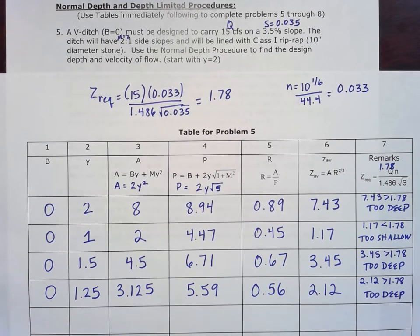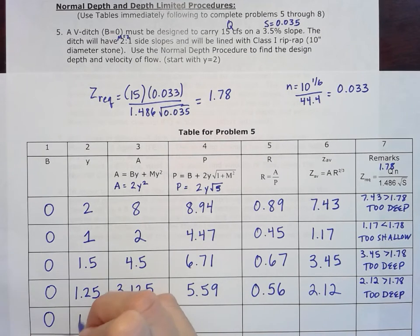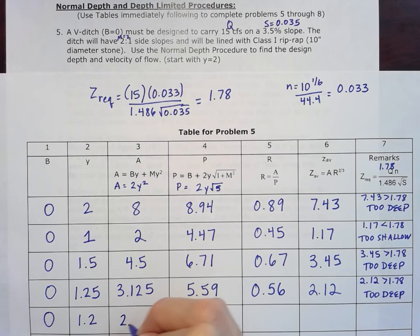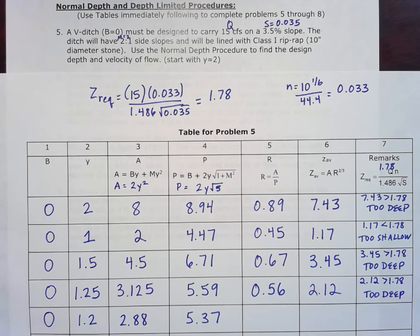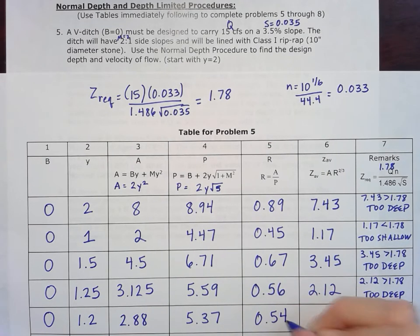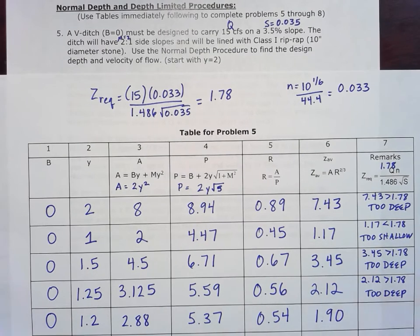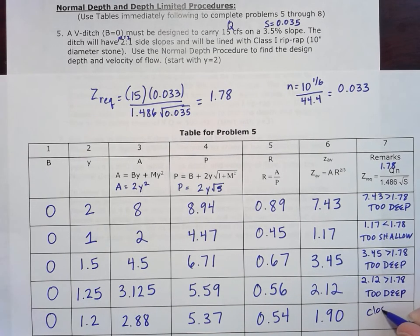Let's go ahead and do one more here. We're still a little too deep, so let's try to bring that depth down just by a little bit. I'm just going to go to 1.2 now. I get 2.88 for an area, 5.37 for a wetted perimeter, 0.54 for hydraulic radius, which gets me to 1.90 for z average. That's pretty close to that 1.78. Still a little bit bigger, but we're going to call that close enough.